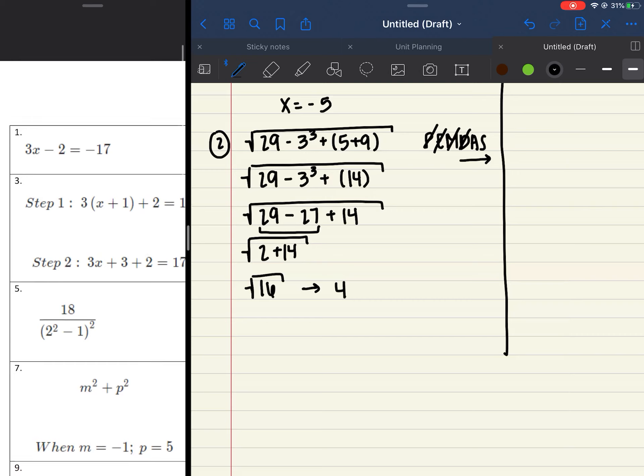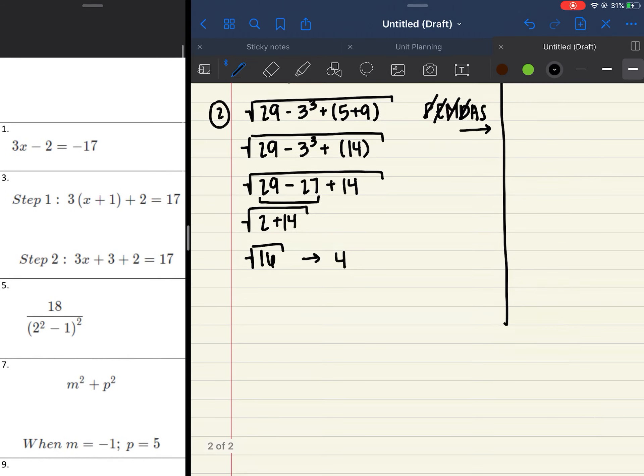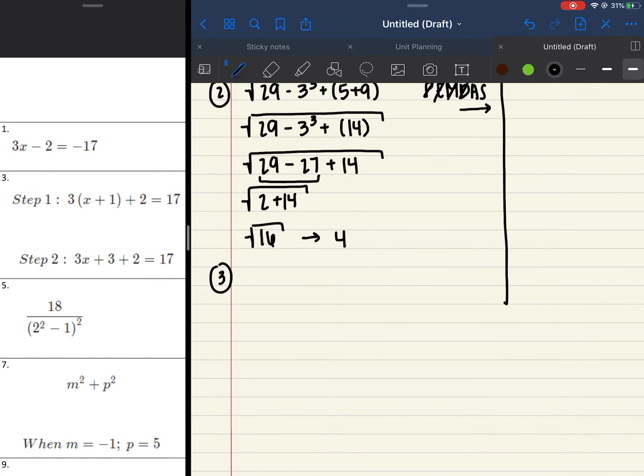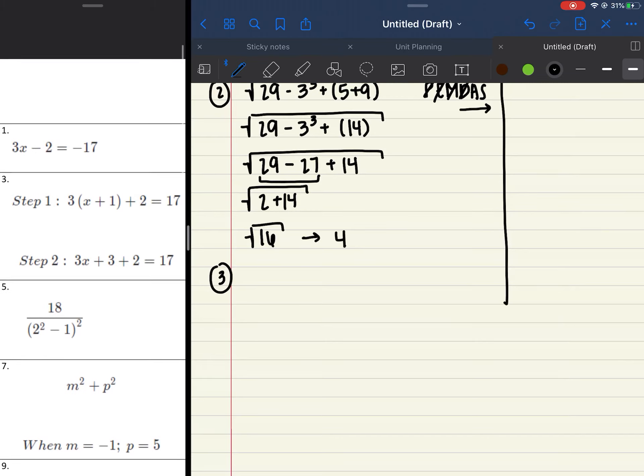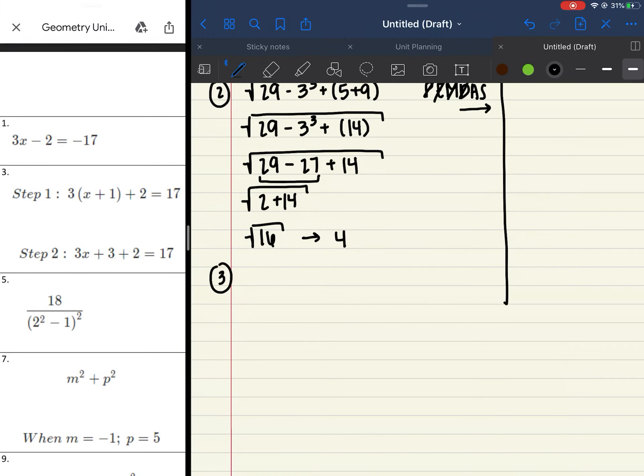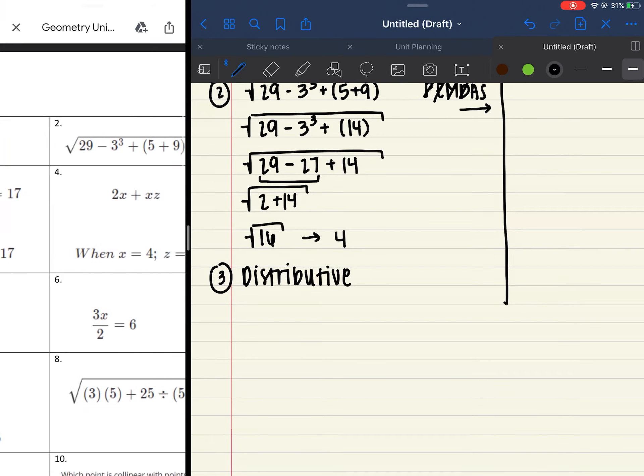Now when I look at number 3, all we asked you was how do you go from step 1 to step 2. And if you look, we got rid of the parentheses, which means that we distributed. So there were four properties. There was commutative, associative, inverse, and distributive. The only one we've even talked about in class or through lecture is distributive, so that should have been a dead giveaway.